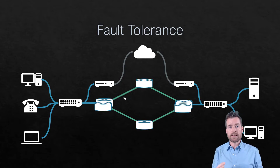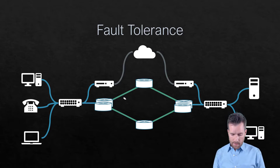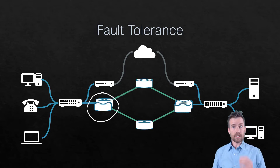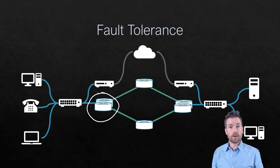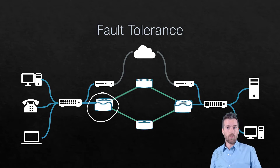Fault tolerance is the ability for a system to heal itself, and we do that in many different ways. An example would be having dual equipment operating side by side. In this example, we've got two routers operating side by side, so if one of those routers fails, the other one will pick up in its place.